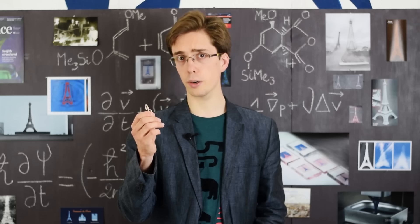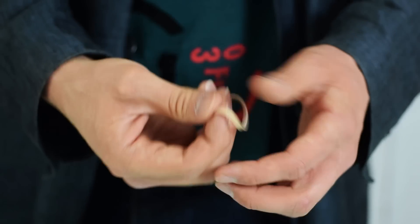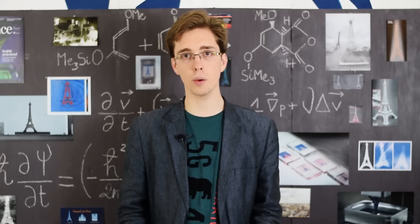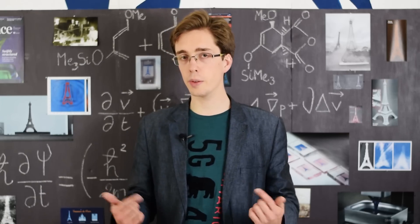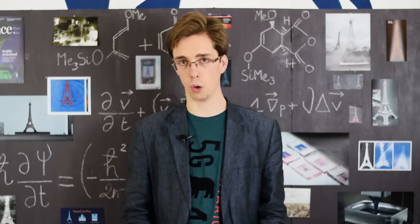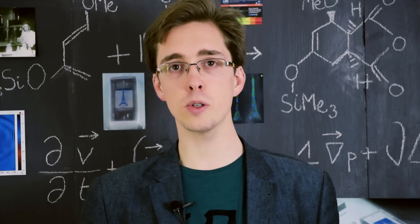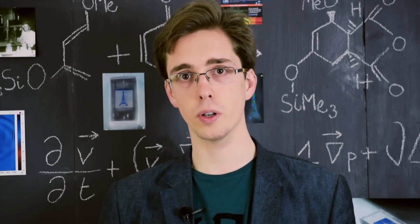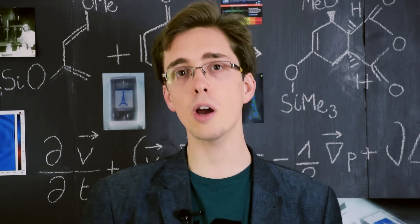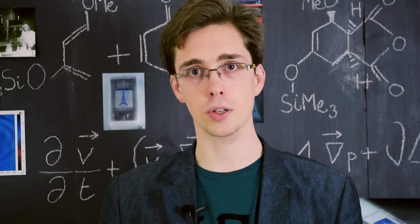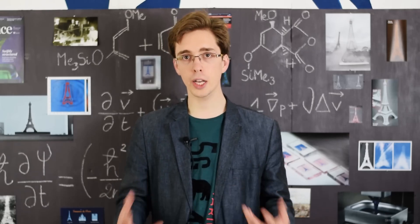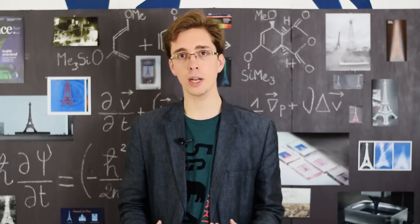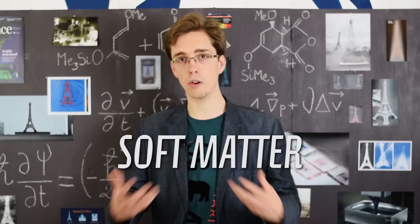But with this rubber band, things are going to get much more interesting. Why are some materials more elastic than others? The answer lies in their microscopic structure. Solids are dense arrangements of atoms and molecules bound to their neighbors by intermolecular forces, and these forces are responsible for the cohesion of the object. To deform a solid, you must go against them. At room temperature, they're very strong in metals, but rather weak in soft matter.